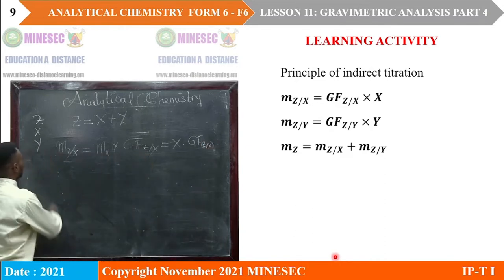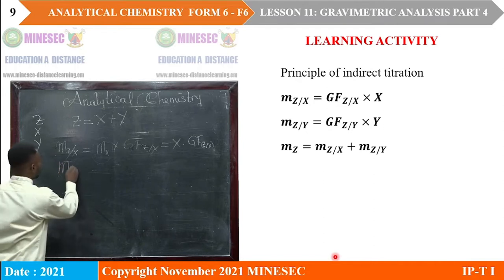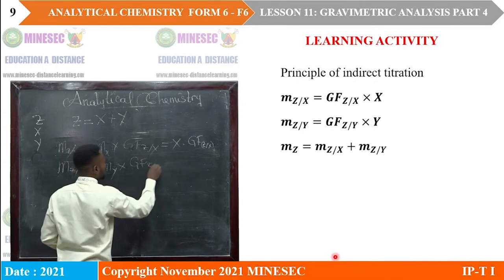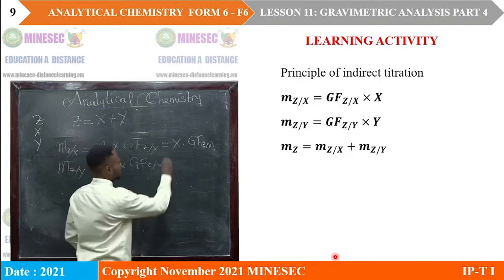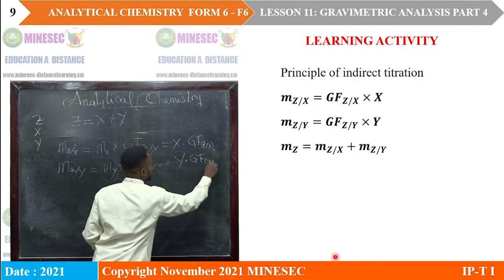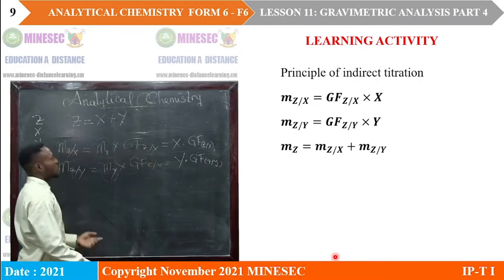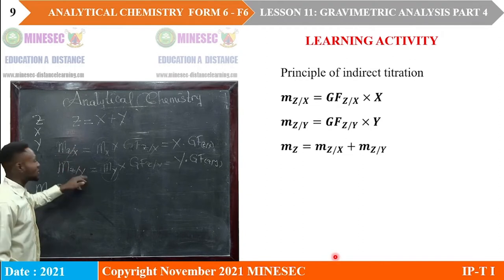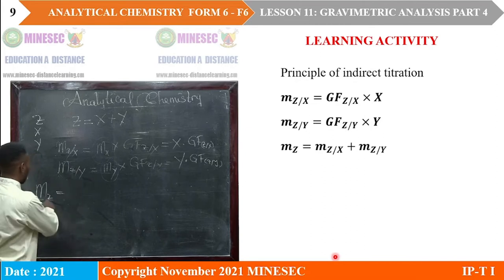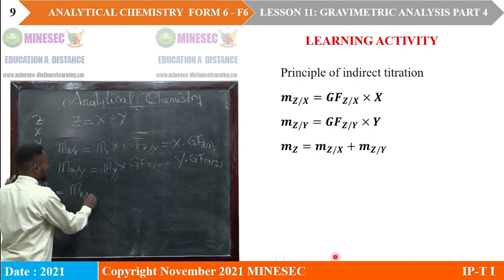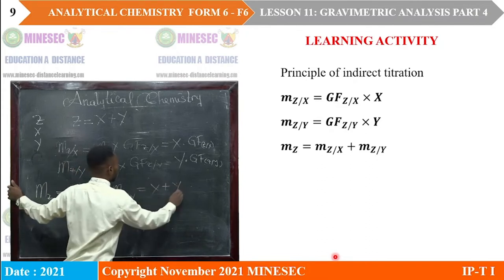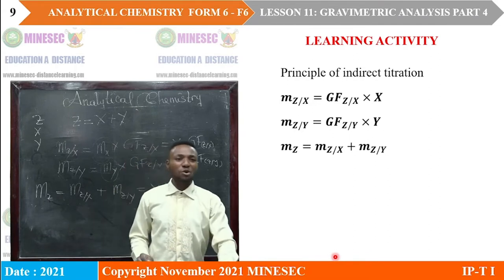That is equation 1. When we do the same thing for the second substance, we have the mass of Z in Y equals the mass of Y times the gravimetric factor of Z in Y. We call that Y times the gravimetric factor of Z in Y. When these two are obtained, you can now know that the mass of that sample is equal to the sum of these two masses — the mass coming from X and the mass coming from Y. So M of the sample equals mass of Z from X plus the mass of Z from Y. This is the principle of indirect titration.